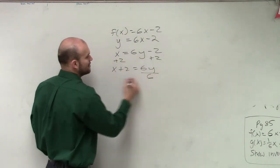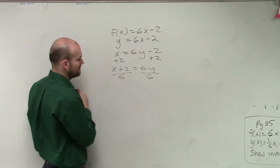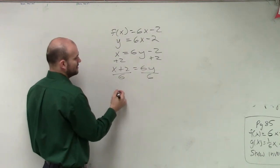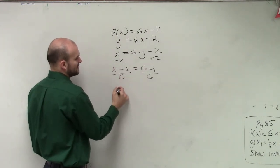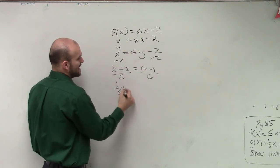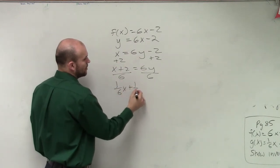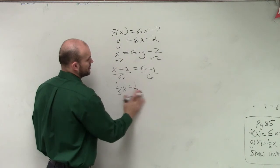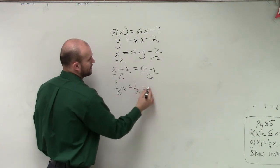Then I divide by 6 using division property of equality. When I divide that through, I get 1/6x plus 1/3, that's a horrible 1/3, equals y.